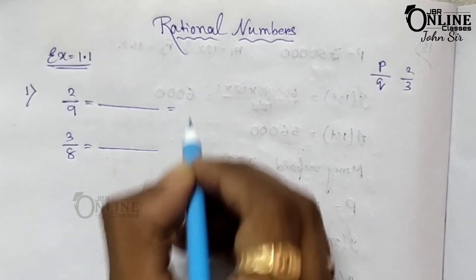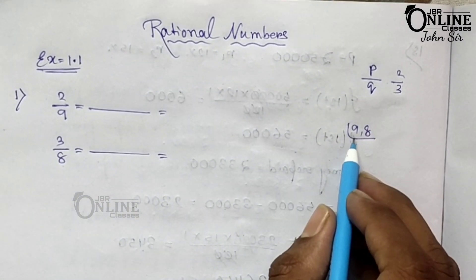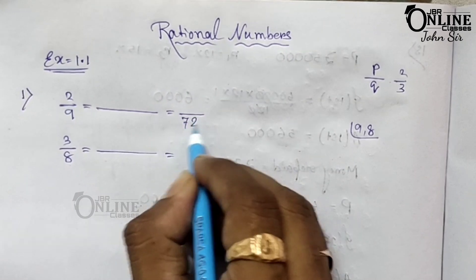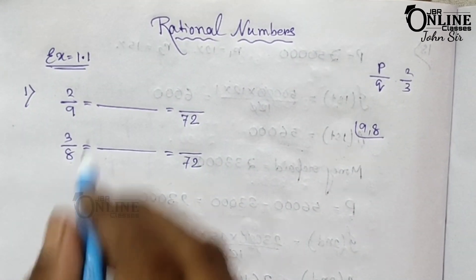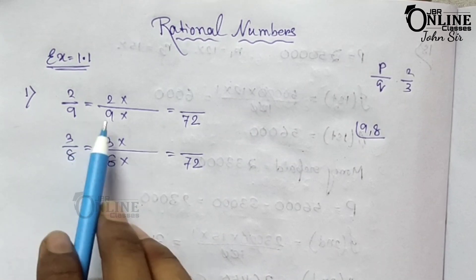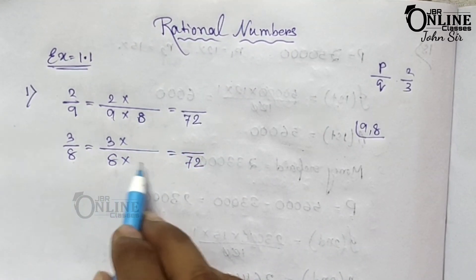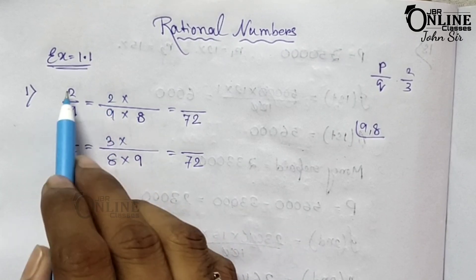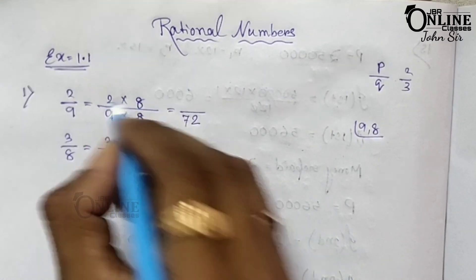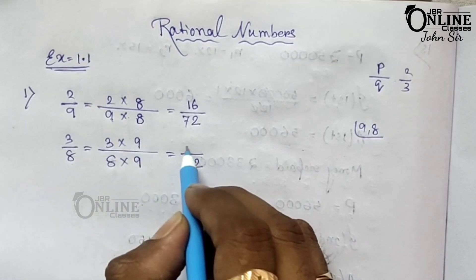To make the denominators the same, first you have to find the LCM of 9 and 8. The LCM of 9 and 8 equals 9 into 8, which is 72. Now, since the denominator of the first fraction is multiplied by 8 to get 72, the numerator is also multiplied by 8: 8 into 2 equals 16. For the second fraction, the denominator is multiplied by 9, so the numerator is also multiplied by 9: 9 into 3 equals 27.